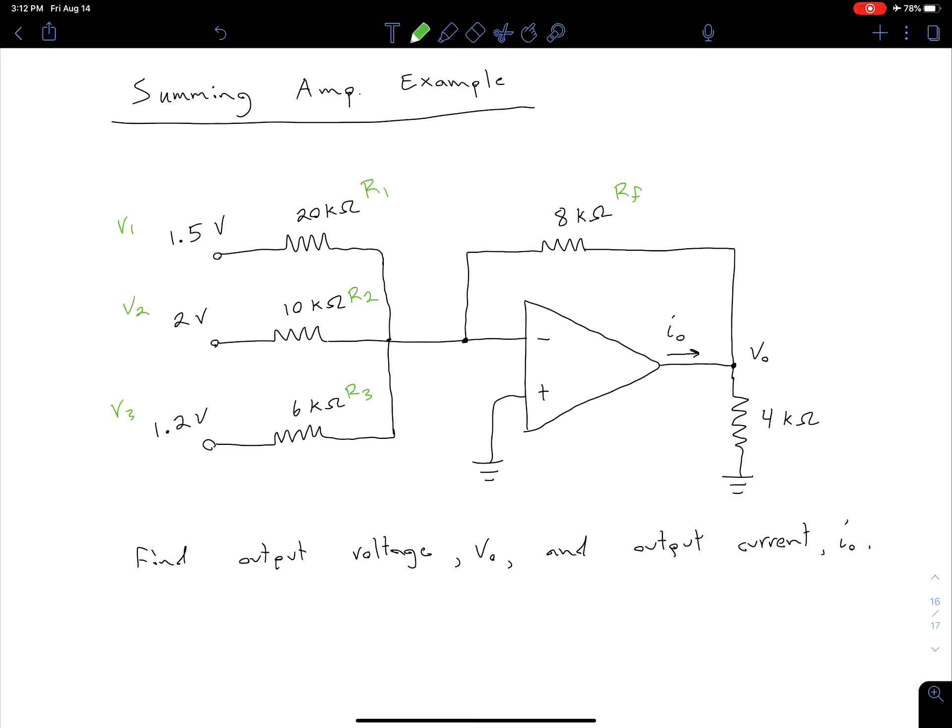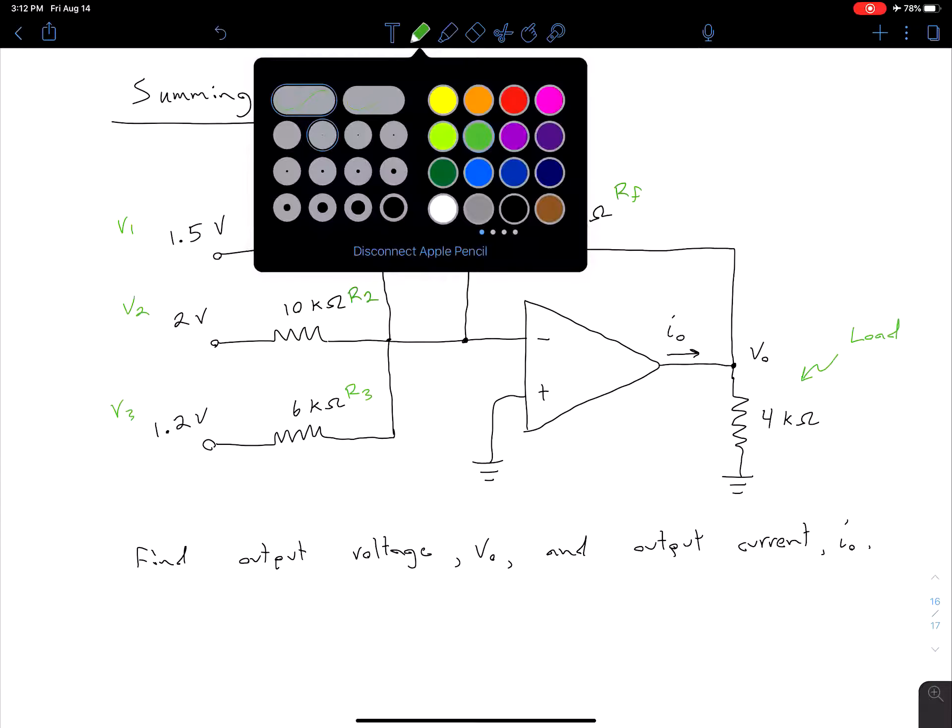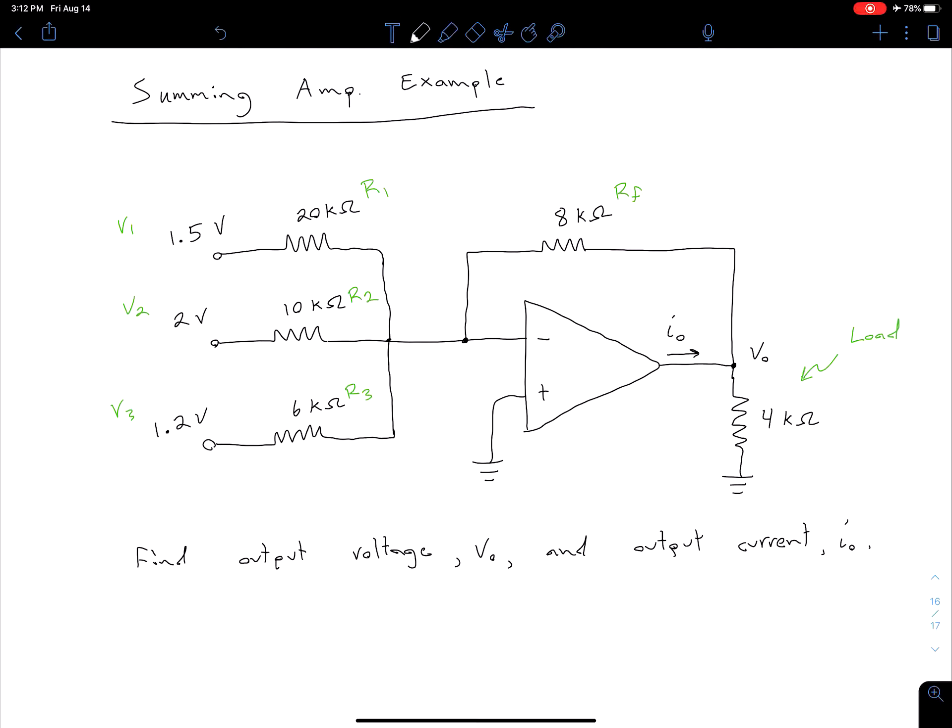Notice we also have this 4 kΩ resistor over here on the right that we've not seen before. This isn't part of our amplifier configuration, but what this 4 kΩ resistor is is our load resistor. This is our load, and that could be representing any number of things, any type of simple light or lamp modeled as a simple resistor.